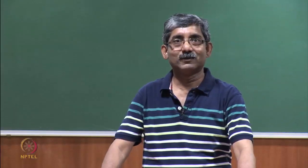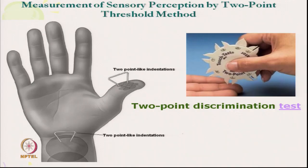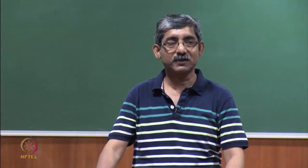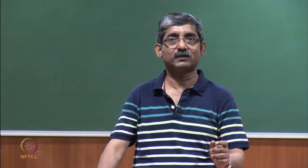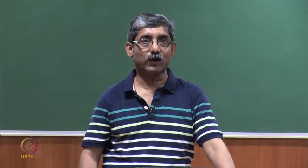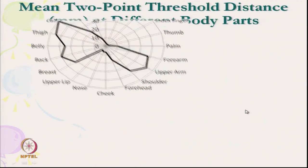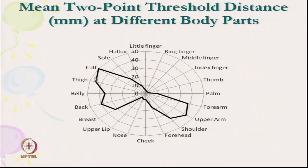We will continue with the topic measurement of sensory perception. As we have mentioned, the two-point discrimination test is where we try to measure the threshold distance where a person can discriminate two different points of contact. At the finger it is very low, around 2.5 millimeters, and at the calf or thigh region it is very high. This is the lowest zone, highest zone, and the curve is taken from the same data.